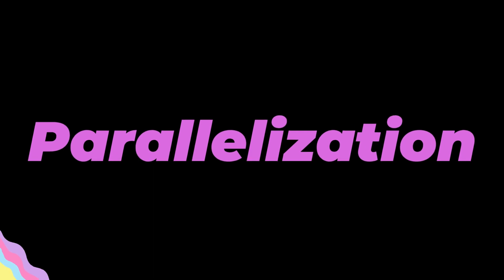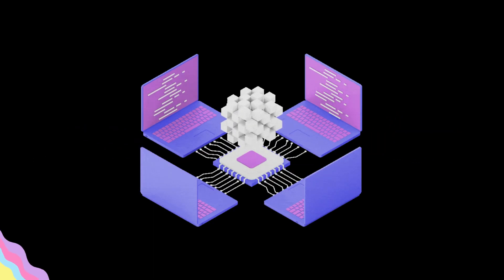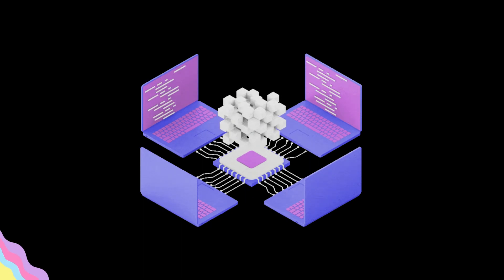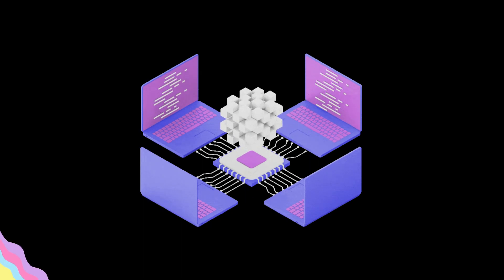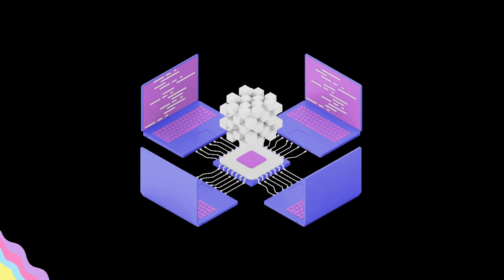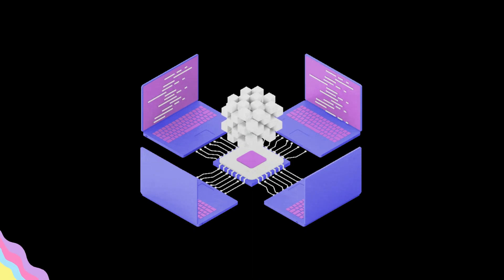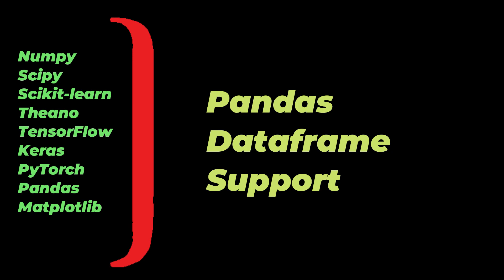Pandas has one major drawback called parallelization. Parallelization is something that gives you the power of performing distributed data processing tasks easily among huge data volumes, but in pandas it is not achievable since it has single-node support. That's why pandas is not good for handling huge data volumes.